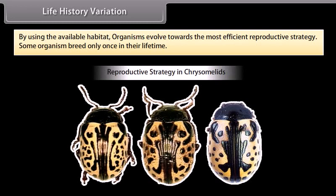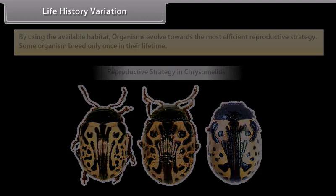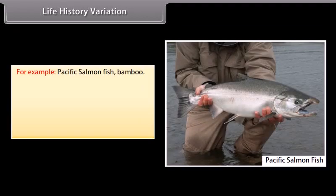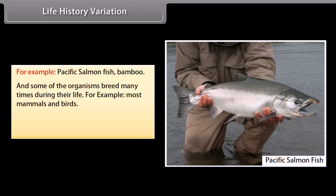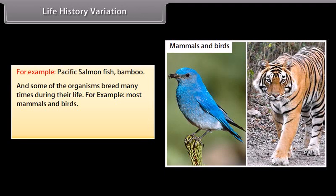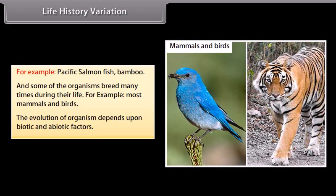Life history variation: by using the available habitat, organisms evolve towards the most efficient reproductive strategy. Some organisms breed only once in their lifetime, for example Pacific salmon, bamboo. Others breed many times during their life, for example most mammals and birds. The evolution of organisms depends upon both biotic and abiotic factors.